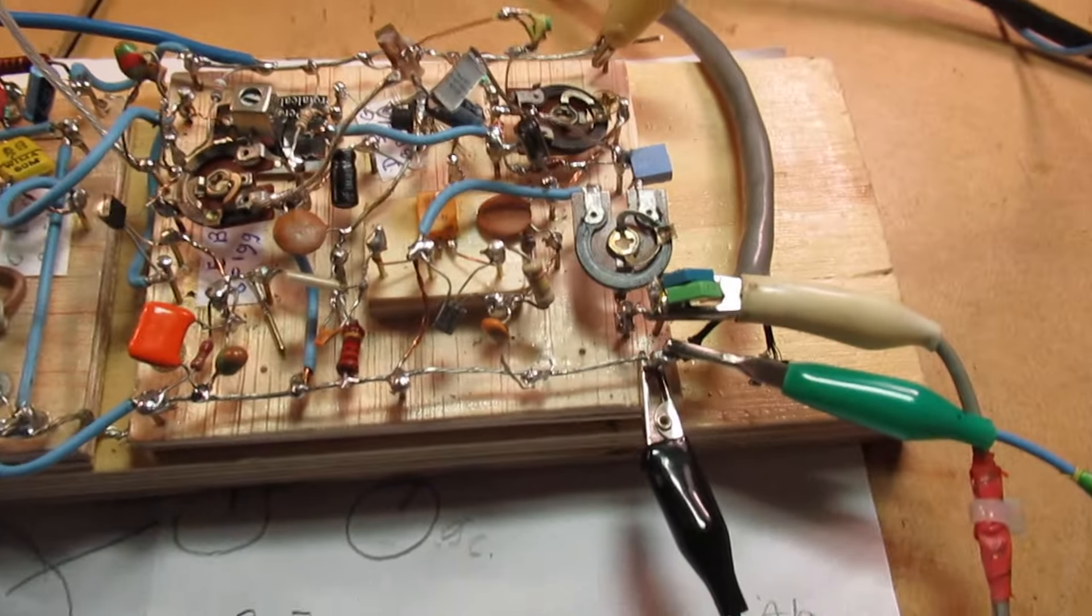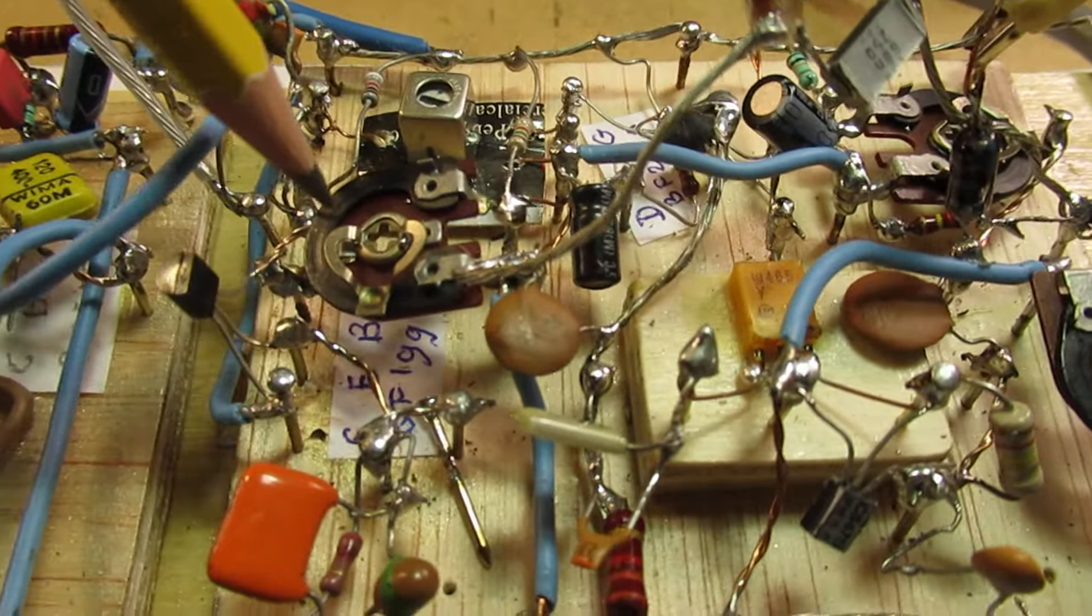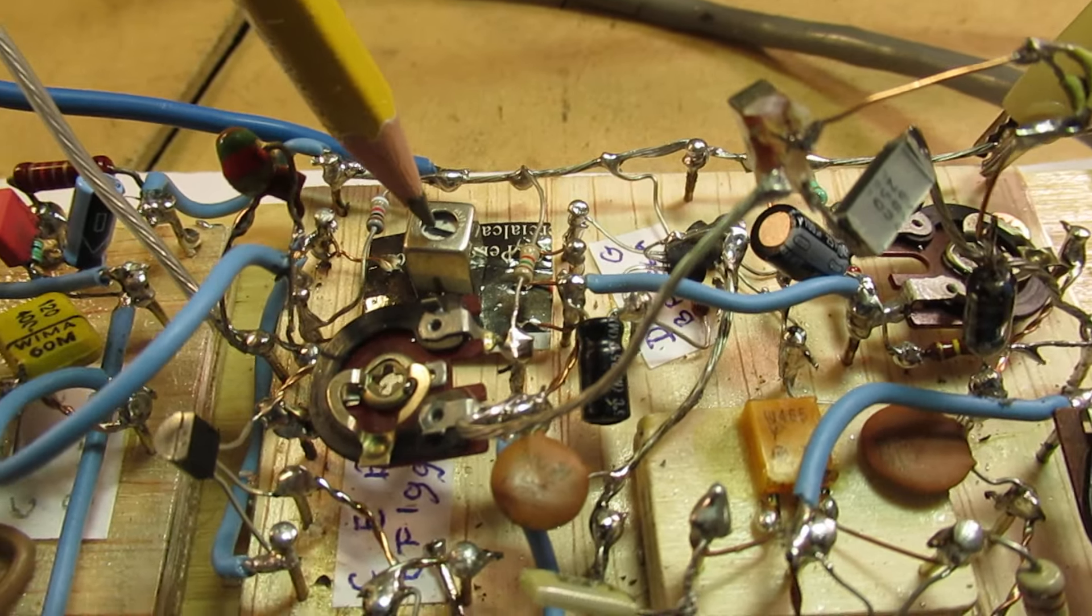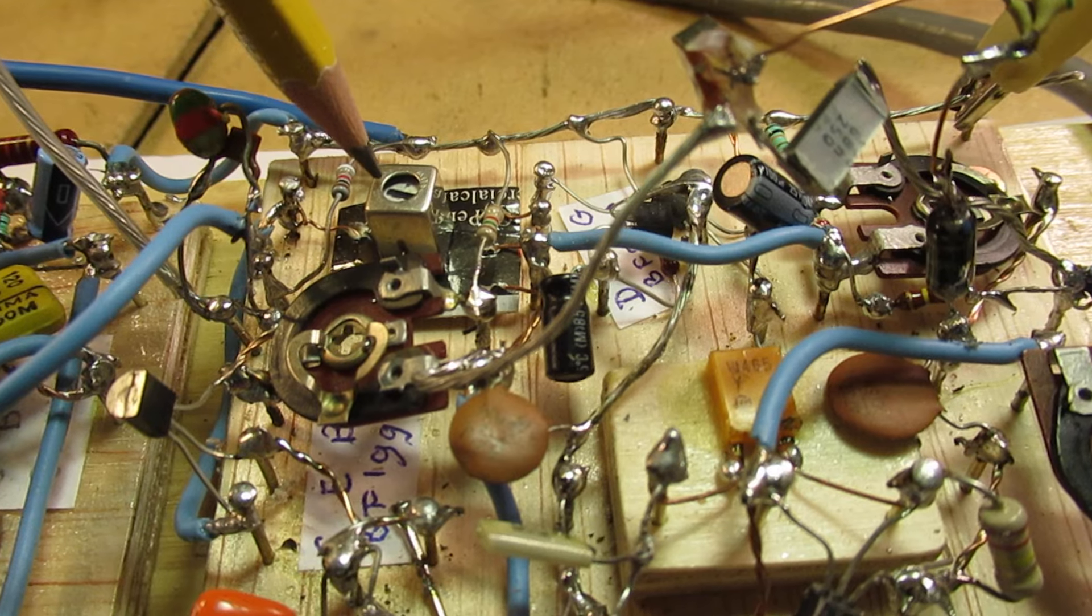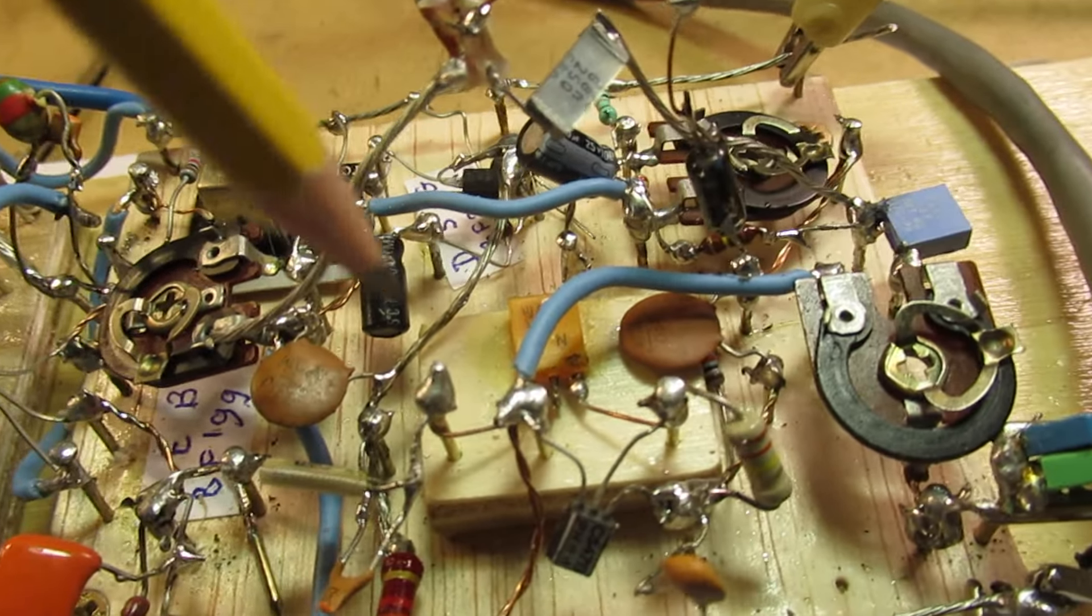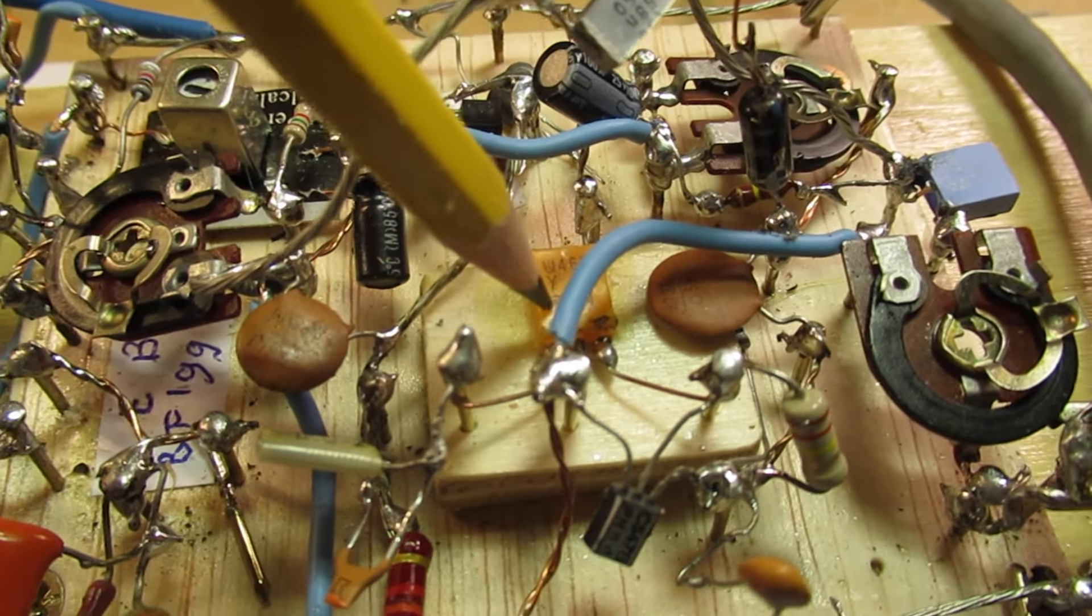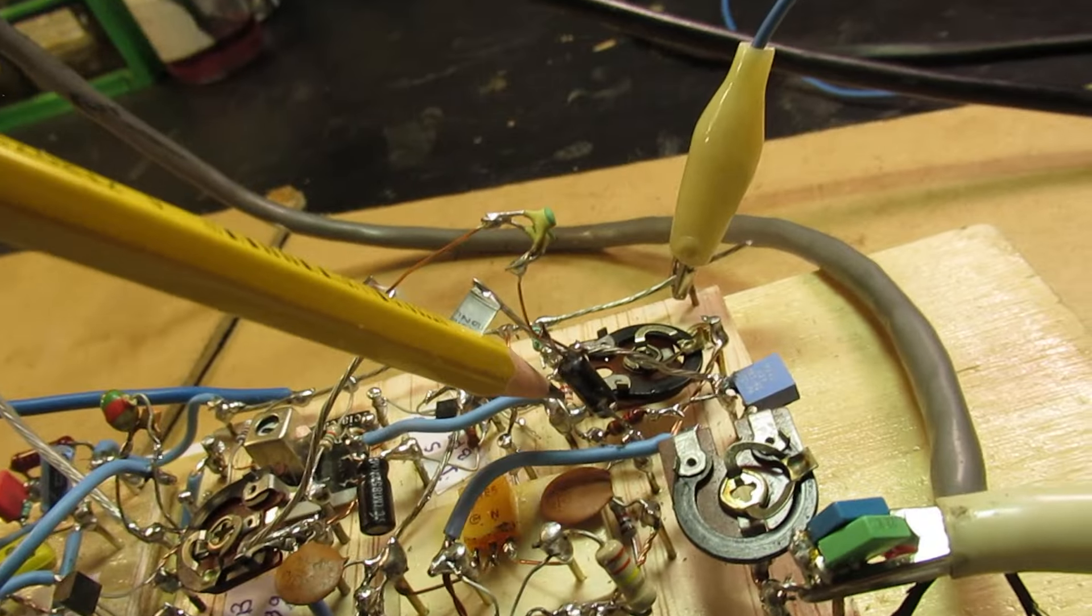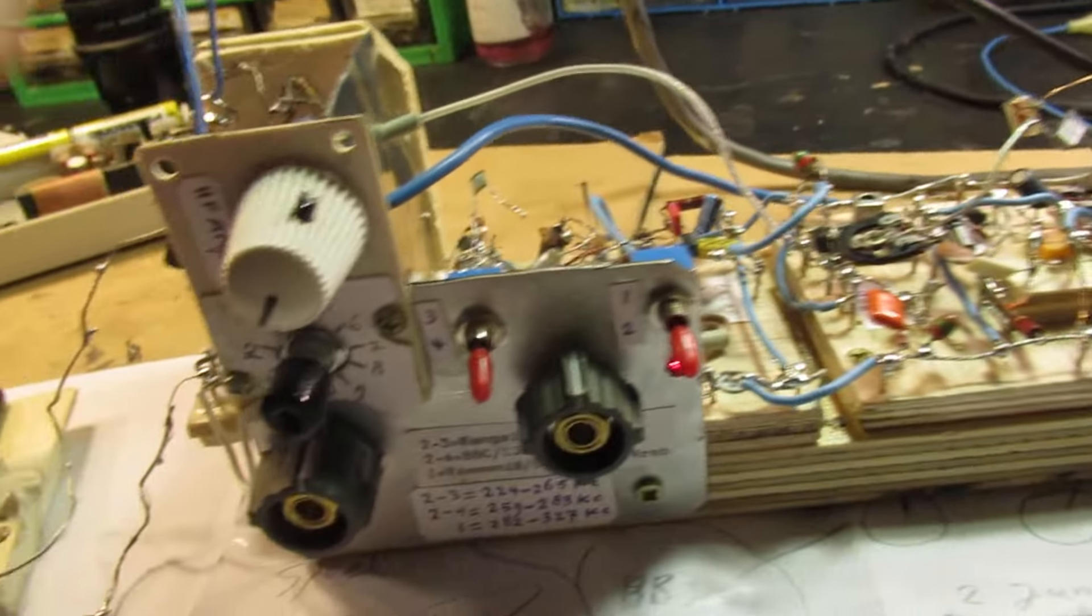The intermediate frequency amplifier: the mixer can be set here with this potentiometer. Here is the first IF amplifier. It's a coil, 456 kilocycles, and here a ceramic filter of 465 kilocycles. It's exactly the same, and here a good quality diode for the AM detection.